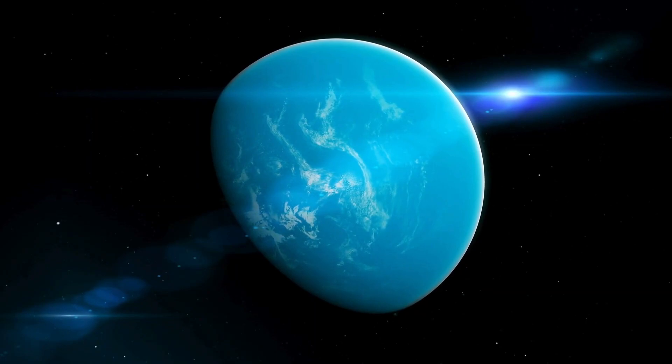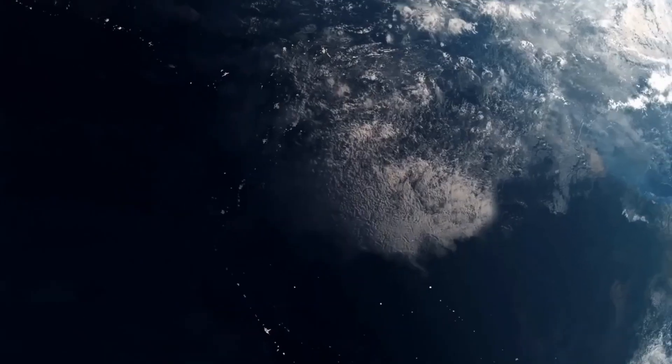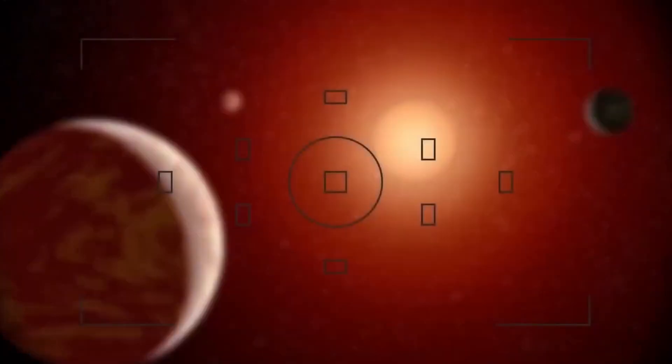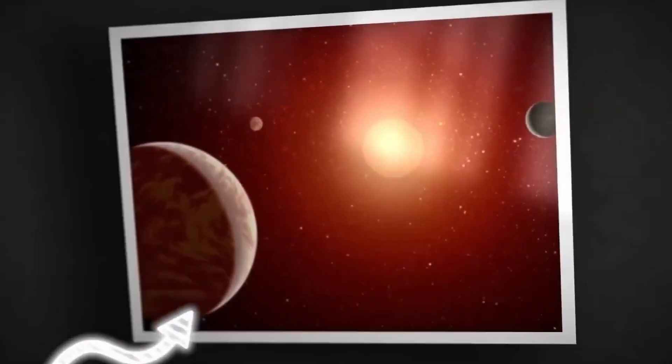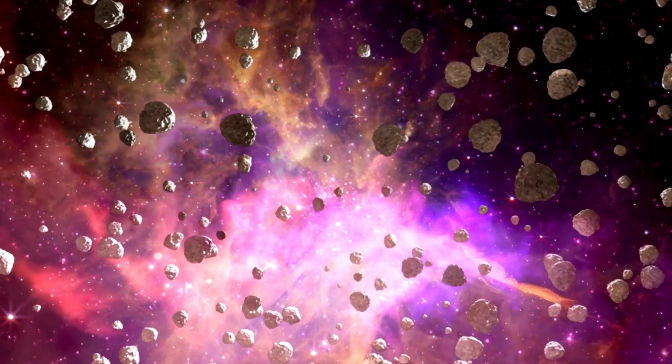Proxima Centauri b isn't the only one in its orbit around the red dwarf star. It has a companion, Proxima Centauri c, and who can say for sure what other secrets the star system holds. Perhaps there's another companion that we have yet to discover. The mysteries don't stop there.